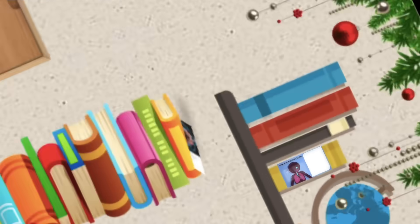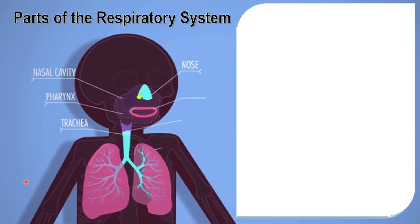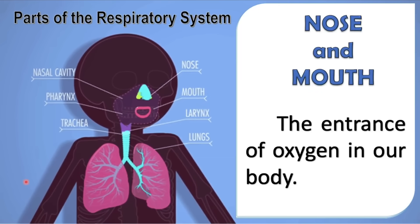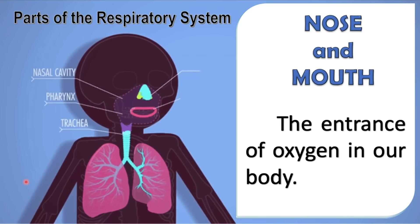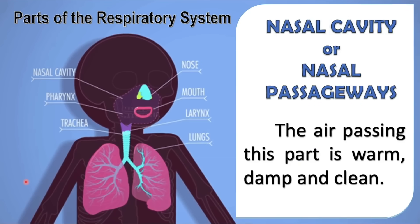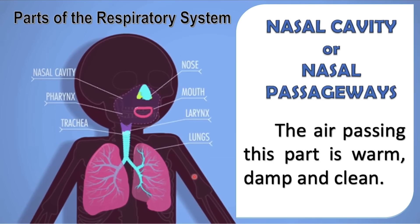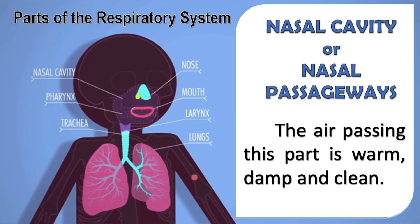Now, let us have the parts of the respiratory system. The first one: nose and mouth. These are the entrance of oxygen in our body. Oxygen enters our body through the nose and mouth. Next, nasal cavity or nasal passageways. After oxygen enters through the nose, it will pass through the nasal cavity, making the air warm, damp, and clean of unknown particles.